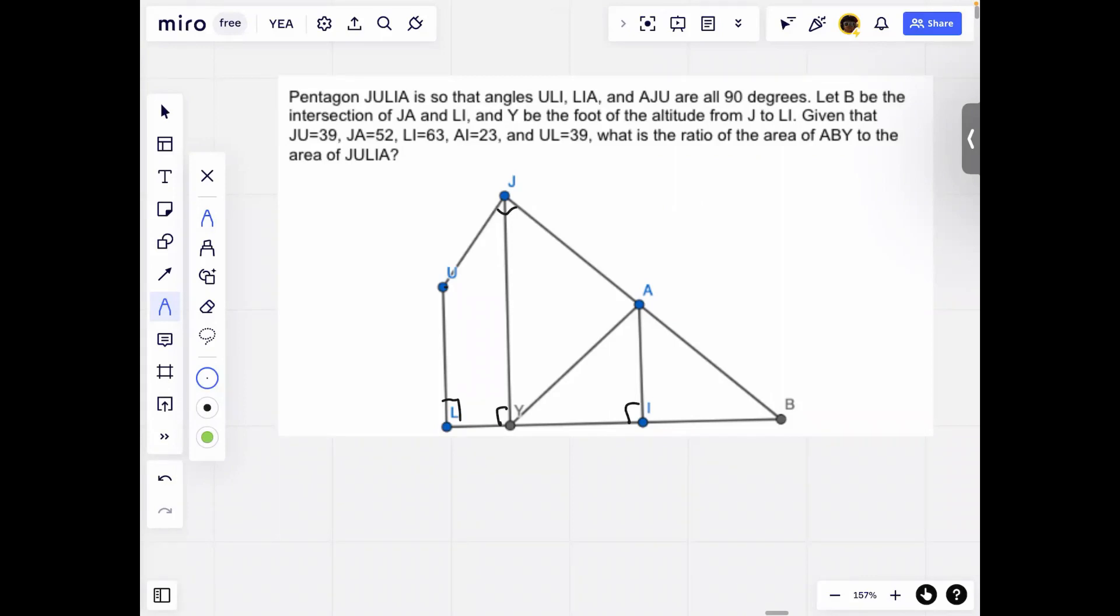Given that JU equals 39, JA is 52, LI is 63, AI is 23, and UL is 39, it's asking for the ratio of the area of ABY to the area of JULIA.